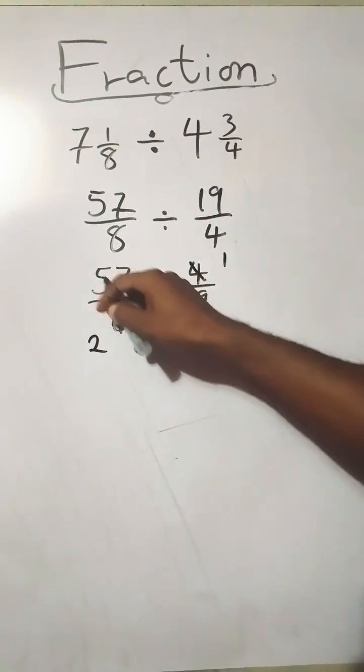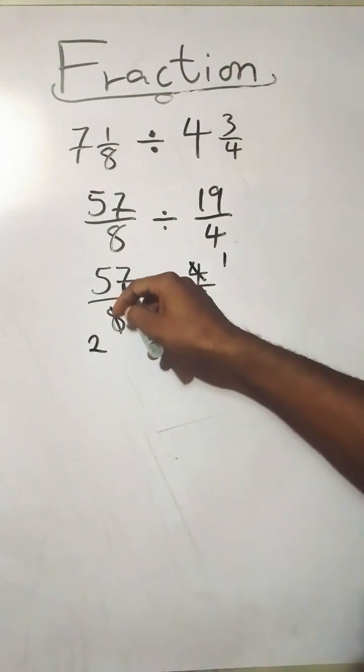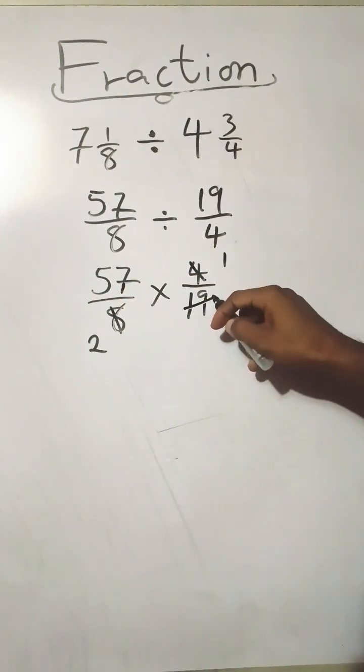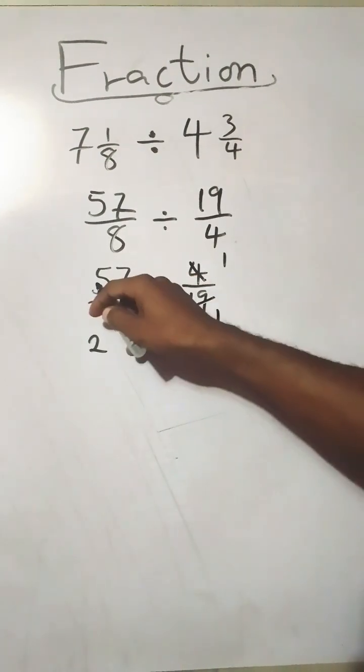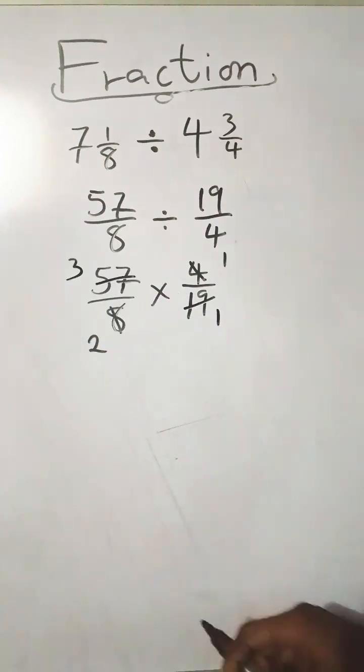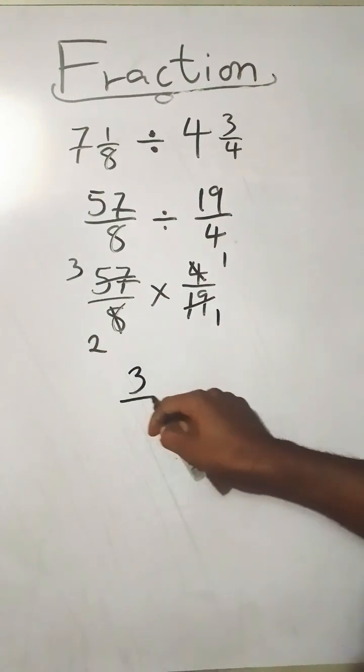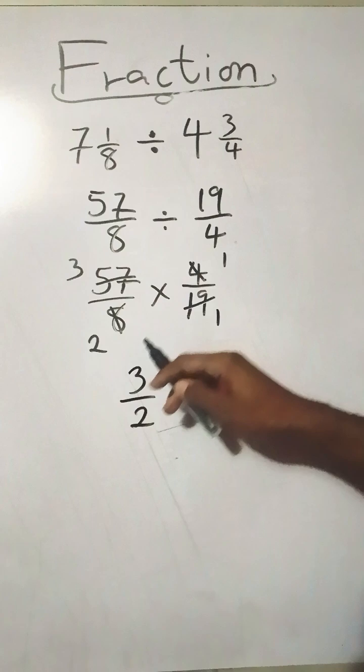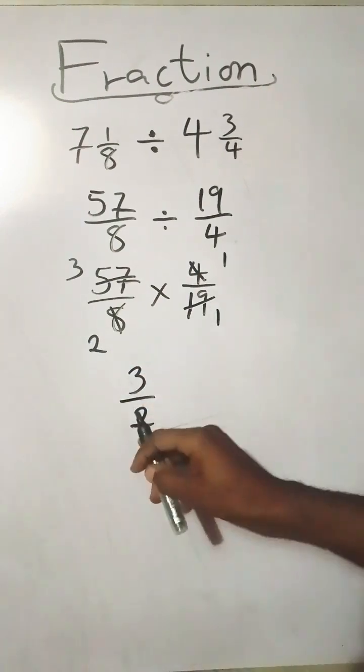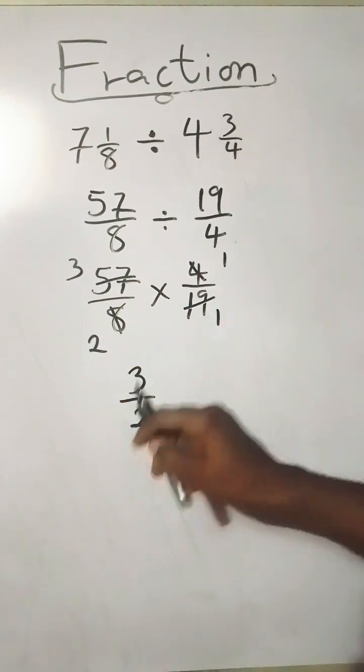And the same applies to 19 and 57 - 19 goes into 19 once and into 57 three times. So you see we have 3 over 2. Three times one you have three, two times one you have two.